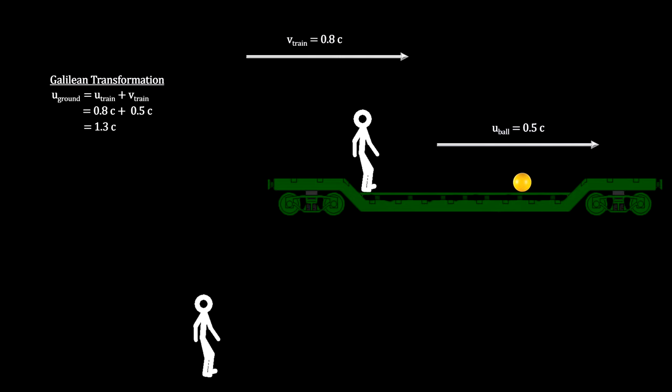If the Galilean transformations were correct, the person on the ground would add these together and see the ball traveling faster than the speed of light.